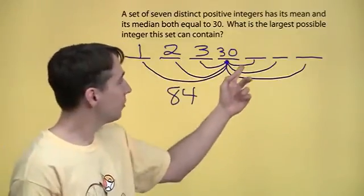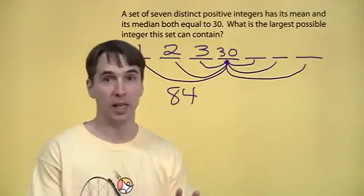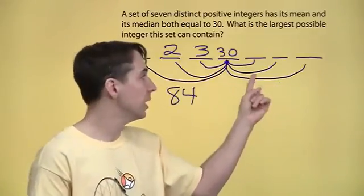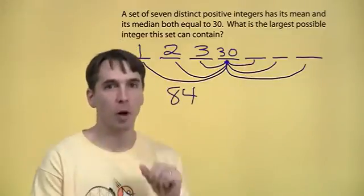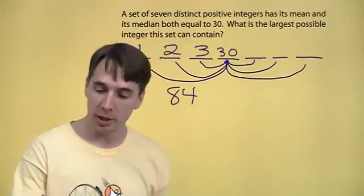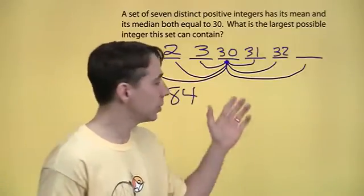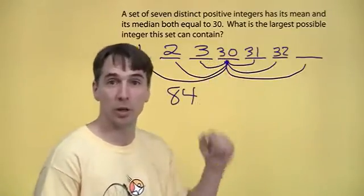So we know that the sum of these three distances also has to be 84. Now we want this one to be as big as it possibly can be, so we want to make these two really small. Again, the integers have to be different, so we'll take these next two numbers to be 31 and 32, because that's as small as we can make them and have them still be larger than 30.